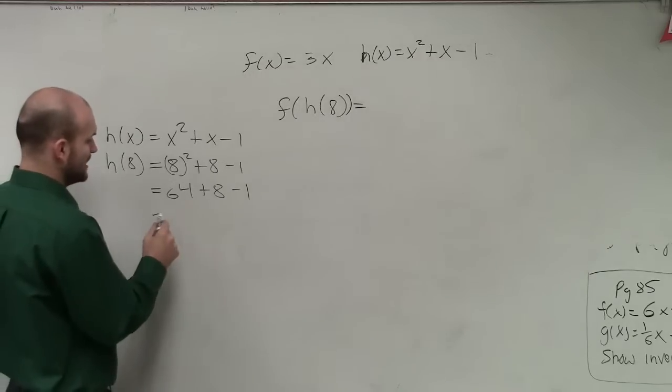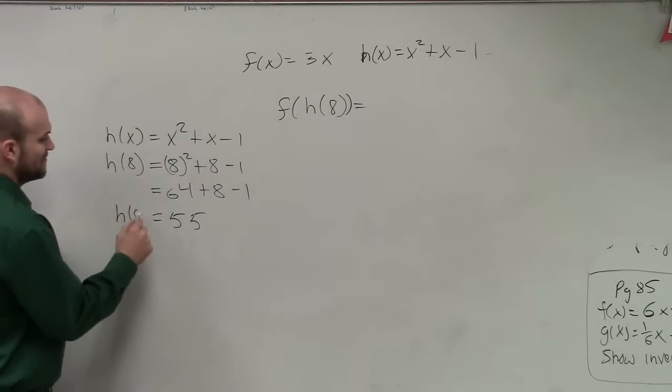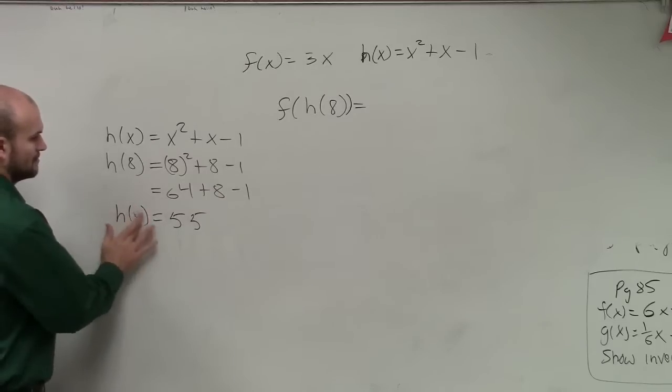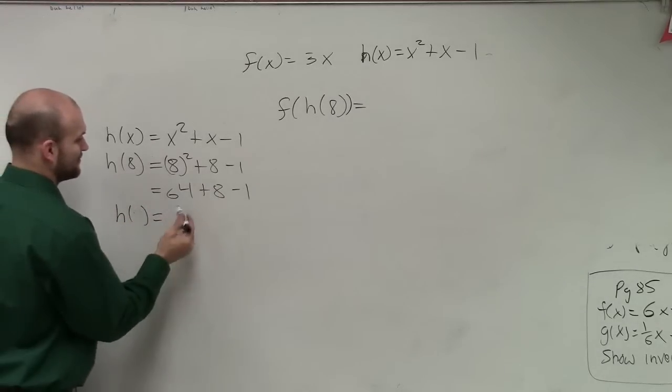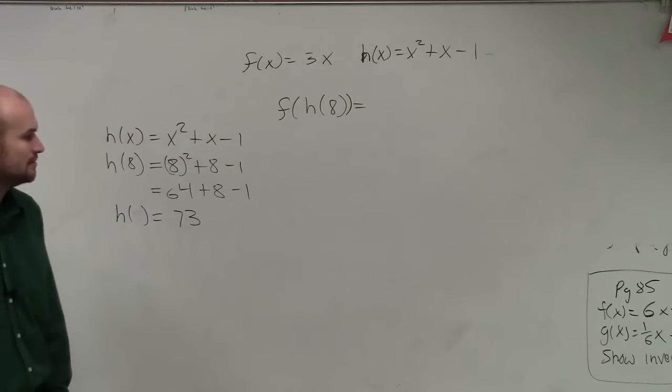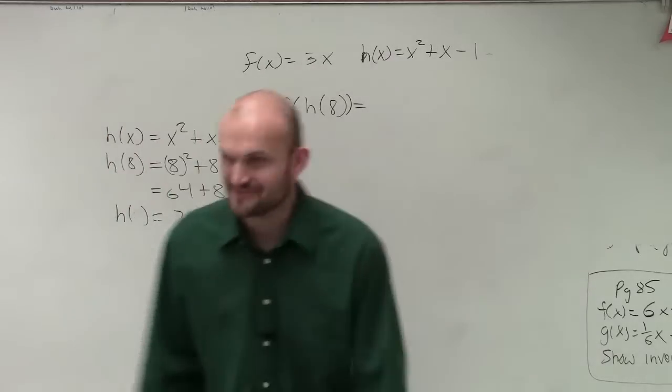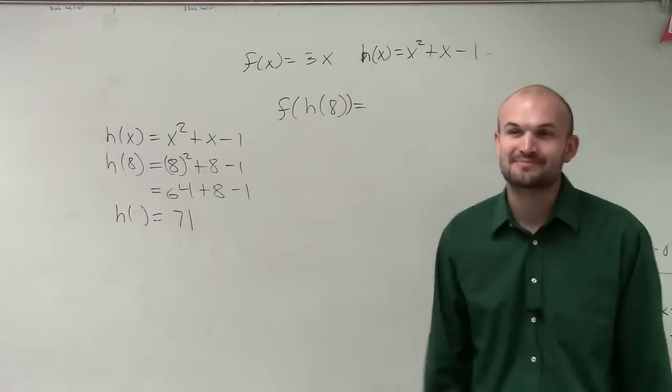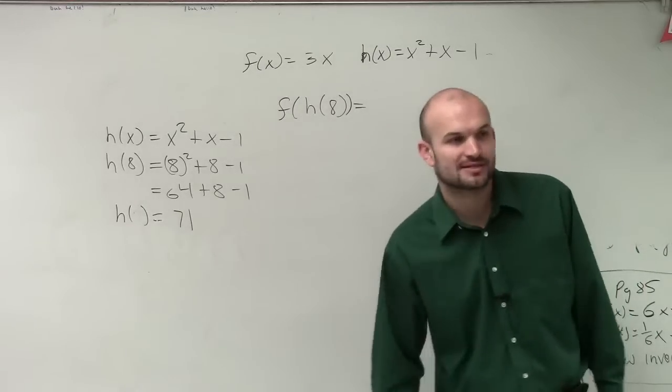56. So therefore we get 55. So we could say h of 8. It's plus. Oh, it's plus. I don't know why I was thinking. You're right. 73. Yes, it says 64 plus 8, which would be 72. And then minus 1 is going to be 71.